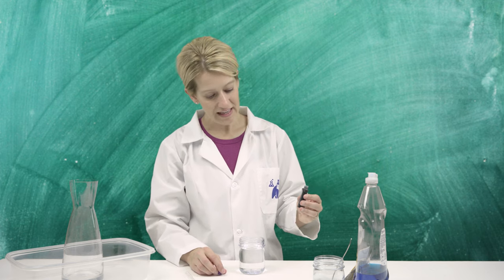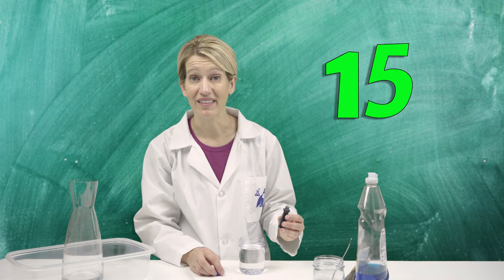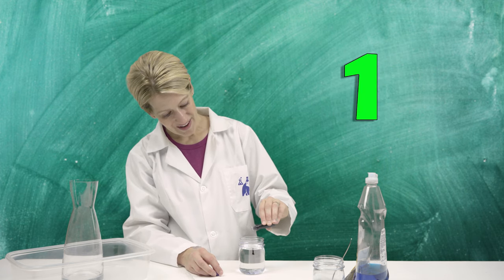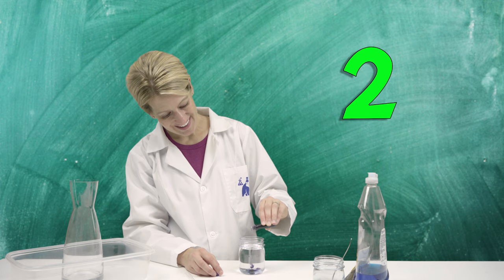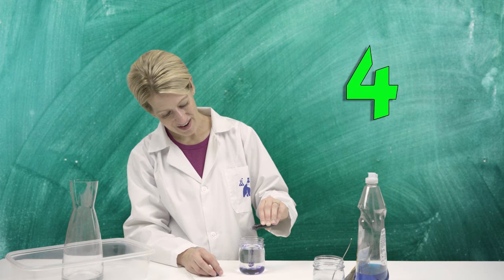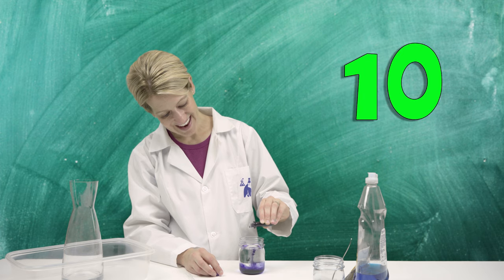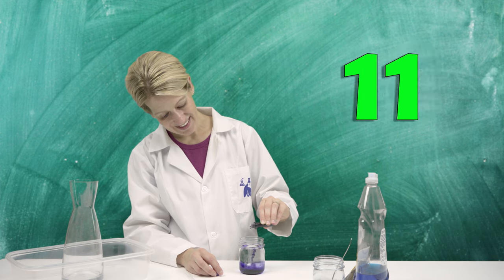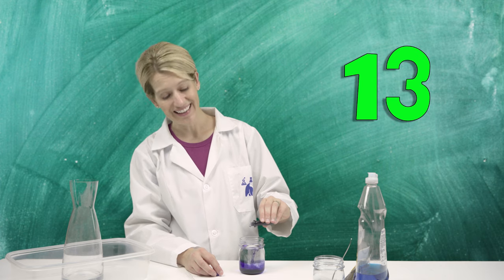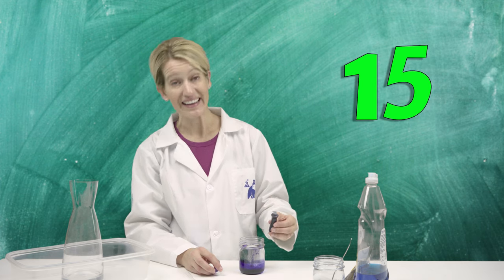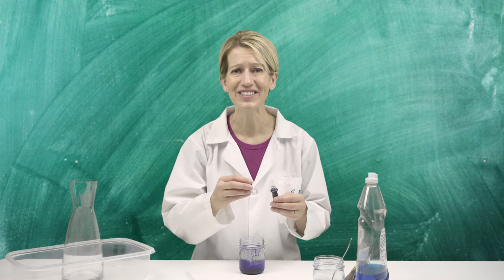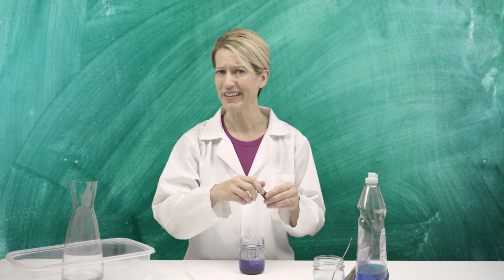So first we're going to start by coloring our hydrogen peroxide with our food coloring. Let's put 15 drops in. Can you help me count? 1, 2, 3, 4, 5, 6, 7, 8, 9, 10, 11, 12, 13, 14, 15. Great job. Wow, your counting is really good.